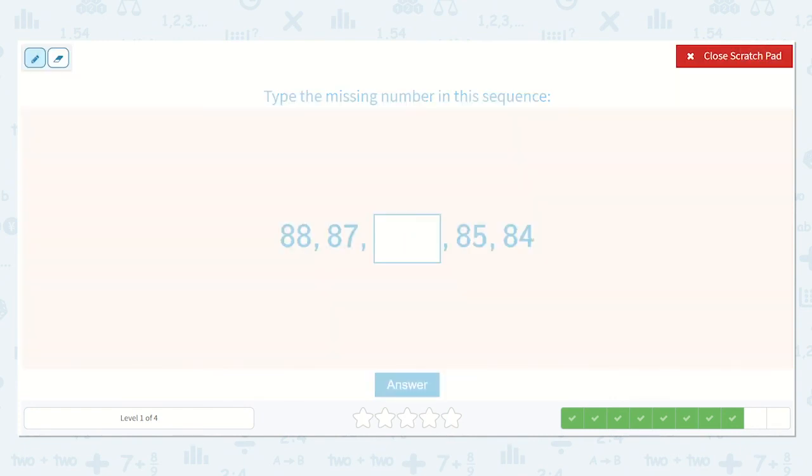Alright, now let's count down. 88, 87, something, 85, 84. What are we counting down by? Yeah, just 1. 88 goes down to 87. 87 goes down to something. Then that goes down to 85, 84. So 8, 7, 6. So 88, 87, 86. Great job.